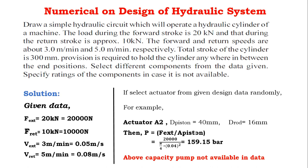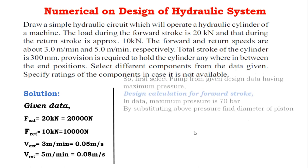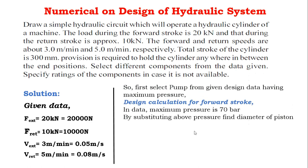Looking at the design data, no pump is available capable of building 159.15 bar pressure. So instead of selecting the actuator first, we follow a different procedure: first select the pump from the given design data that has the maximum pressure capacity.